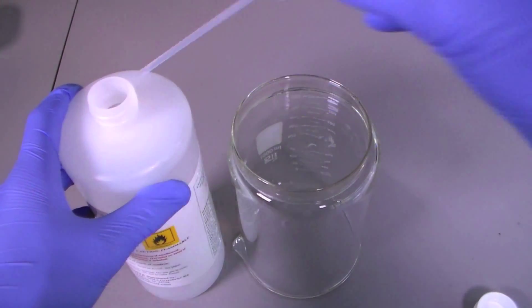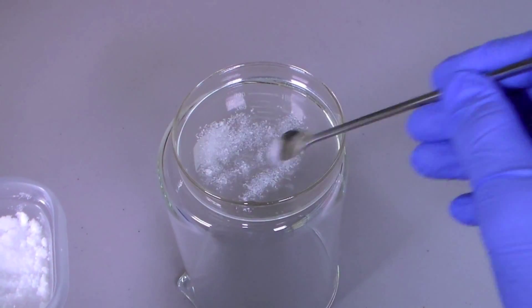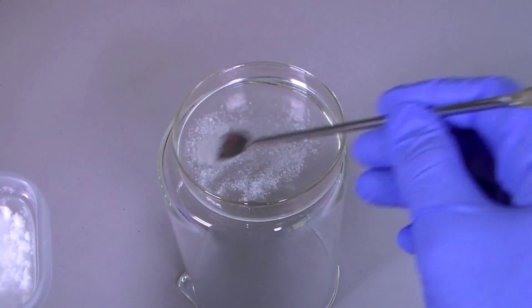Start by adding a few milliliters of methanol to the petri dish and then add a small amount of boric acid. Mix well until most of the acid is dissolved.